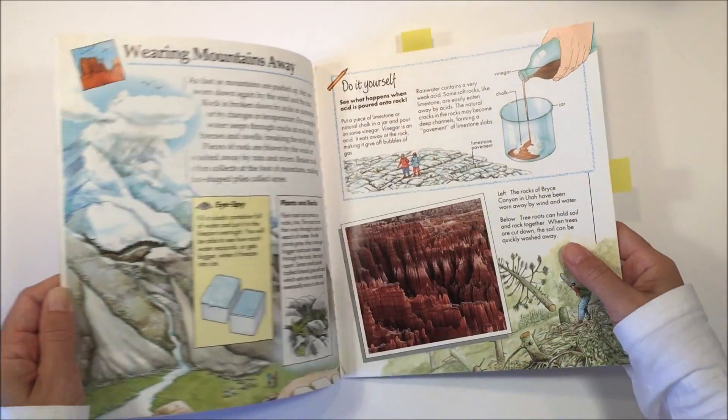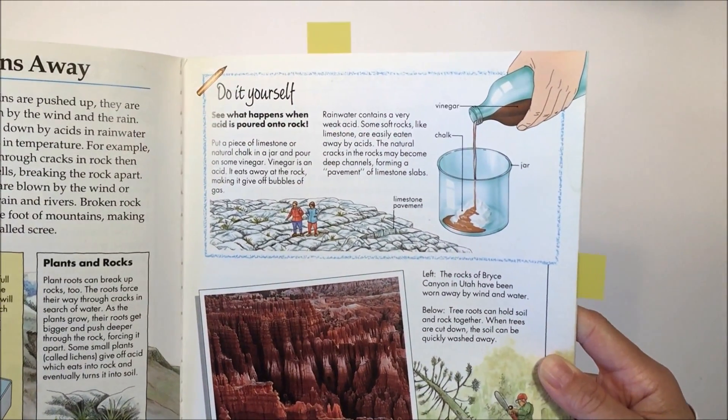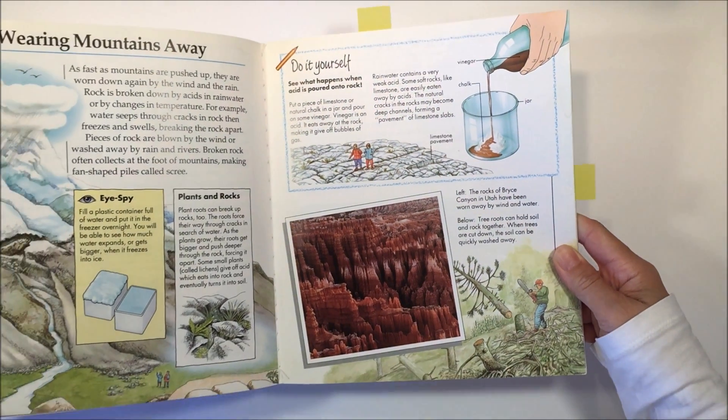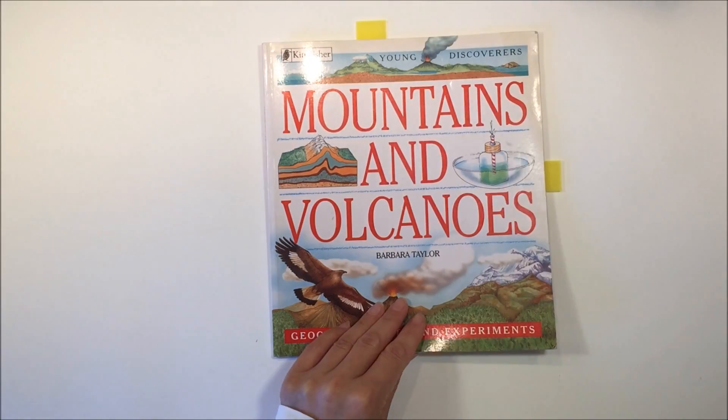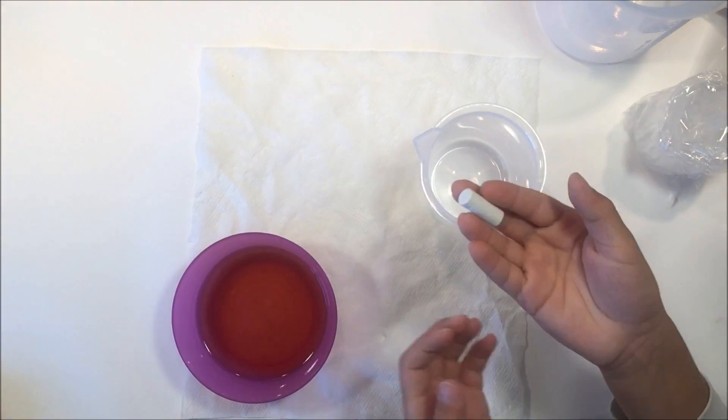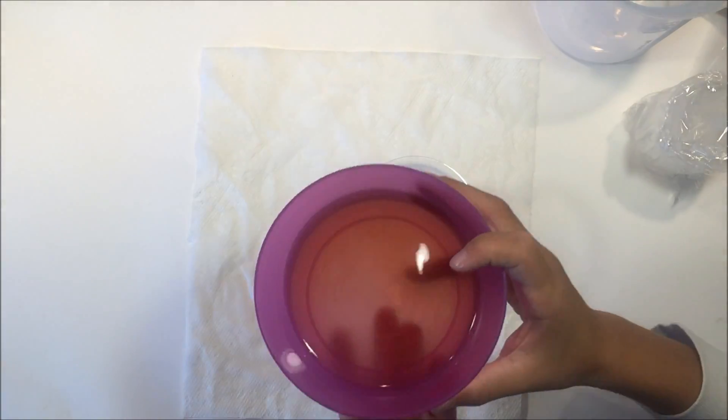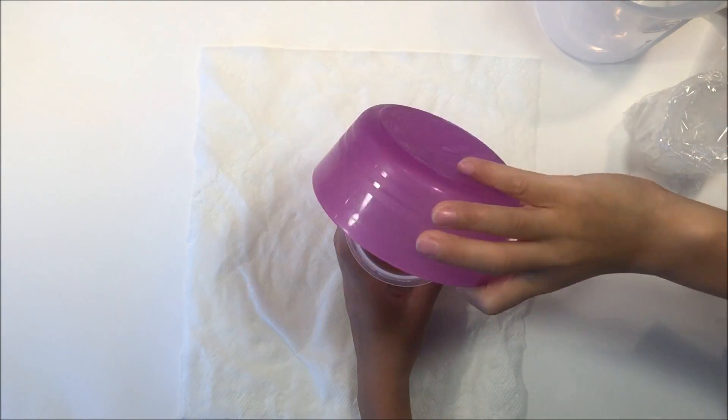Today we are going to be crushing up some chalk and adding vinegar to it. The thing is that chalkboard chalk is not actually the naturally occurring chalk which is composed of calcium carbonate, but rather it is composed of calcium sulfate which is from gypsum rock.